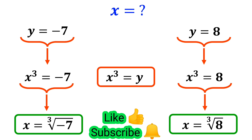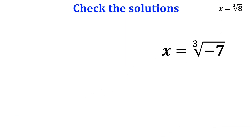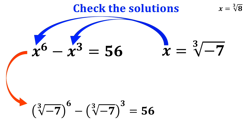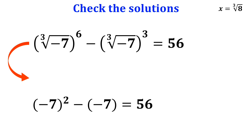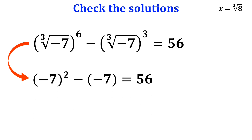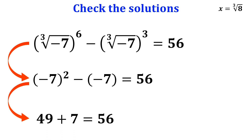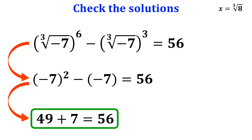Now let's check whether the solutions we found are correct. First, we check the cube root of negative 7. The original equation was x to the power of 6 minus x to the power of 3 equals 56. Substituting x with the cube root of negative 7, we get (cube root of negative 7) to the power of 6 minus (cube root of negative 7) to the power of 3 equals 56, which simplifies to negative 7 squared minus negative 7 equals 56, and further to 49 plus 7 equals 56. The first solution is correct.